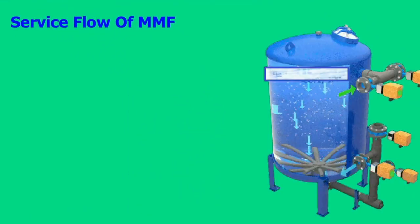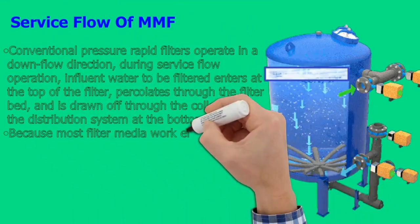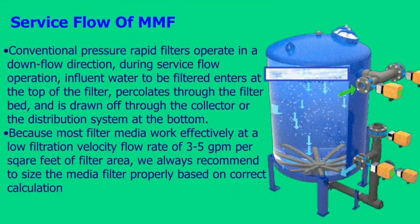Service Flow of MMF. Conventional pressure rapid filters operate in a downflow direction during service flow operation. Influent water to be filtered enters at the top of the filter, percolates through the filter bed, and is drawn off through the collector or distribution system at the bottom. Because most filter media work effectively at a low filtration velocity flow rate of 3–5 GPM per square foot of filter area, we always recommend sizing the media filter properly based on correct calculation.